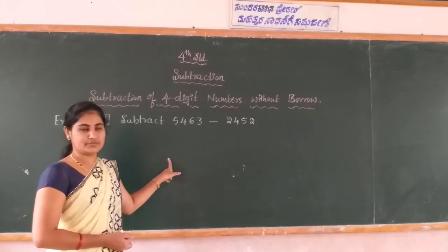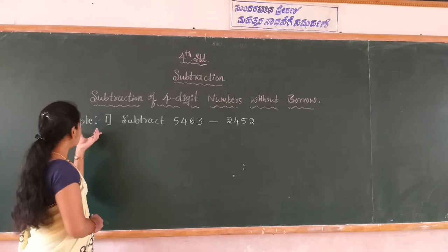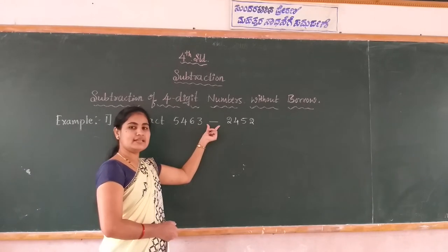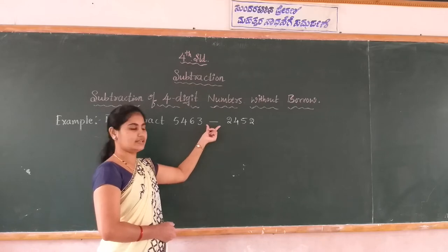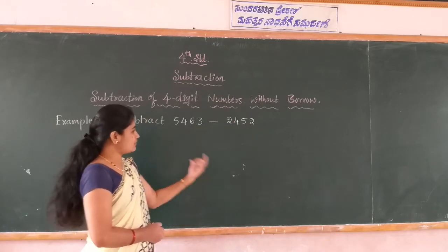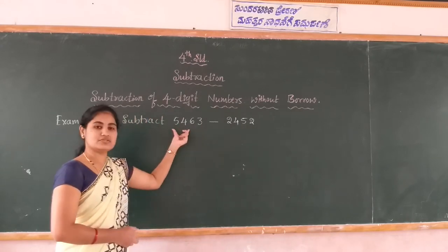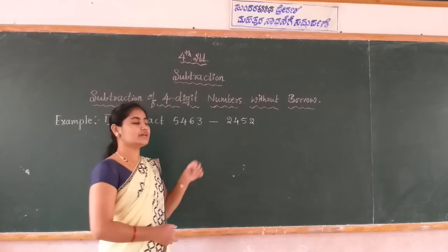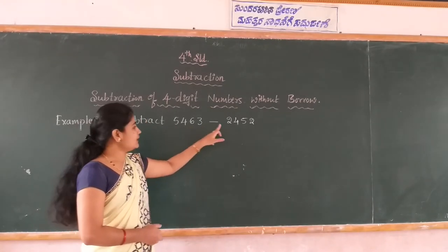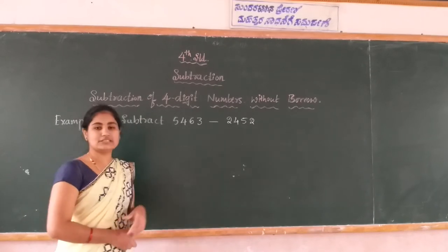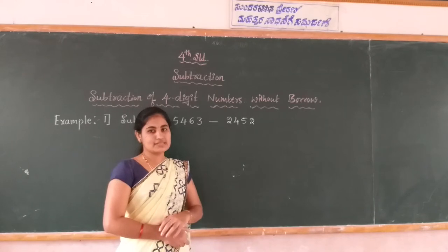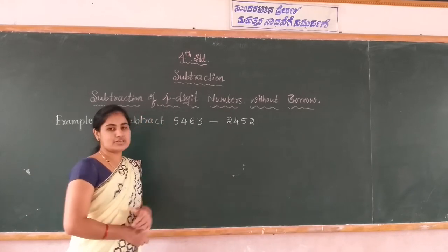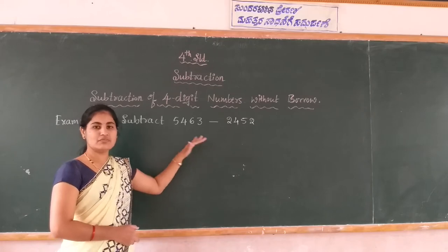I will show with an example. The example one has the question: subtract 5463 minus 2452. You subtract 2452 from 5463. Between these two four digit numbers, 5463 is the bigger number and 2452 is the smaller. You always subtract the smaller number from the bigger number. That's why first you write the four digit numbers in the subtraction box with respect to the place value.